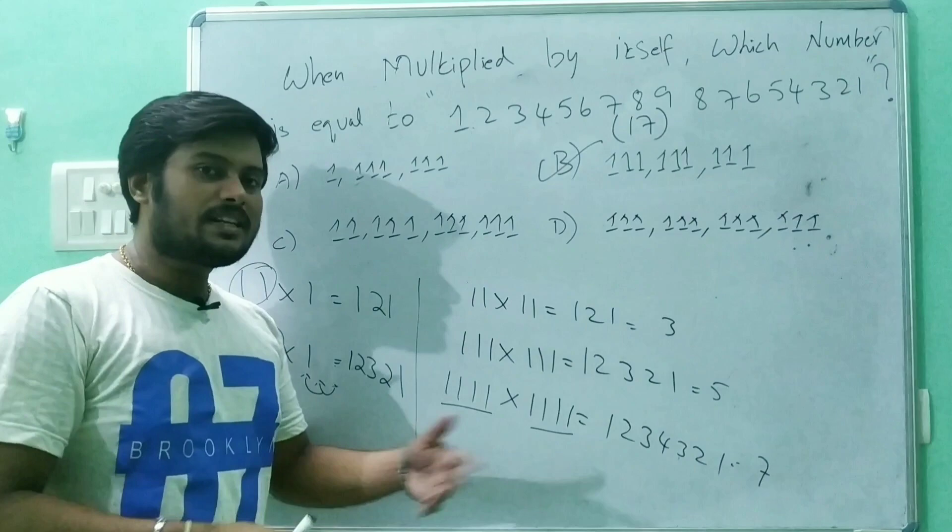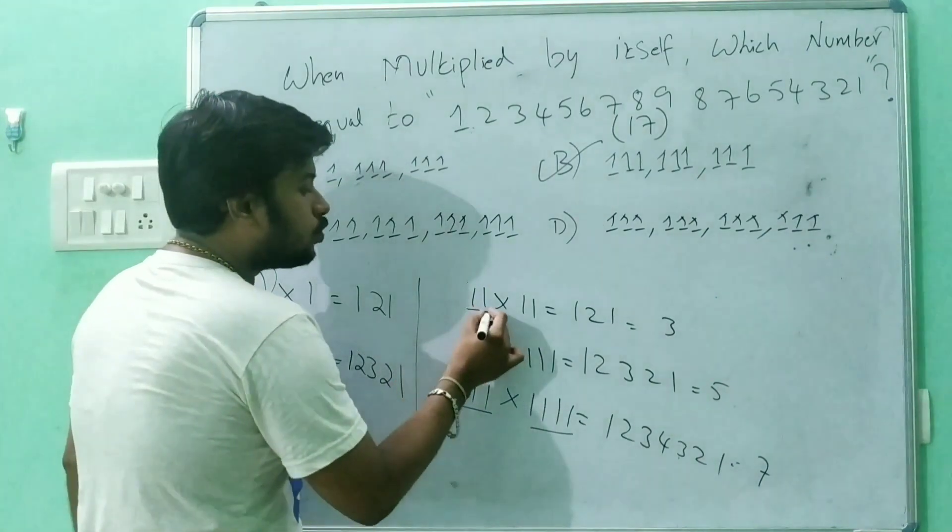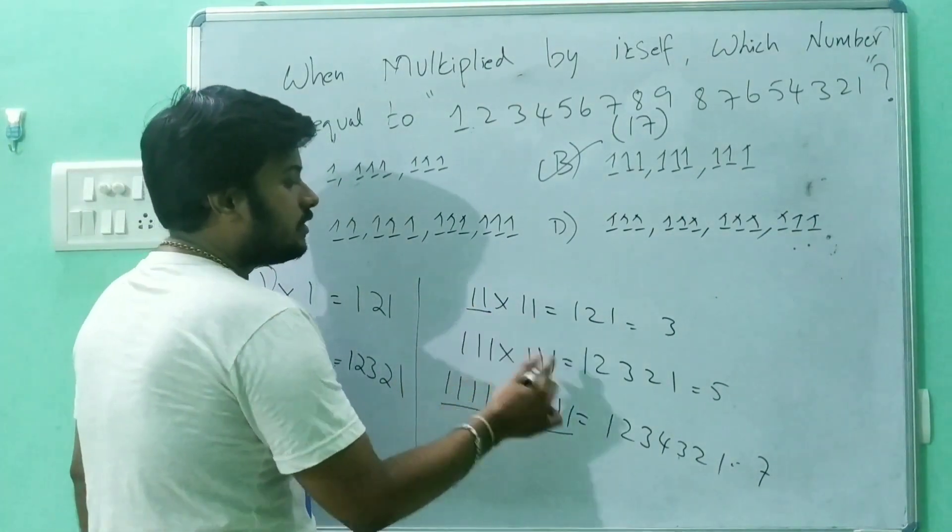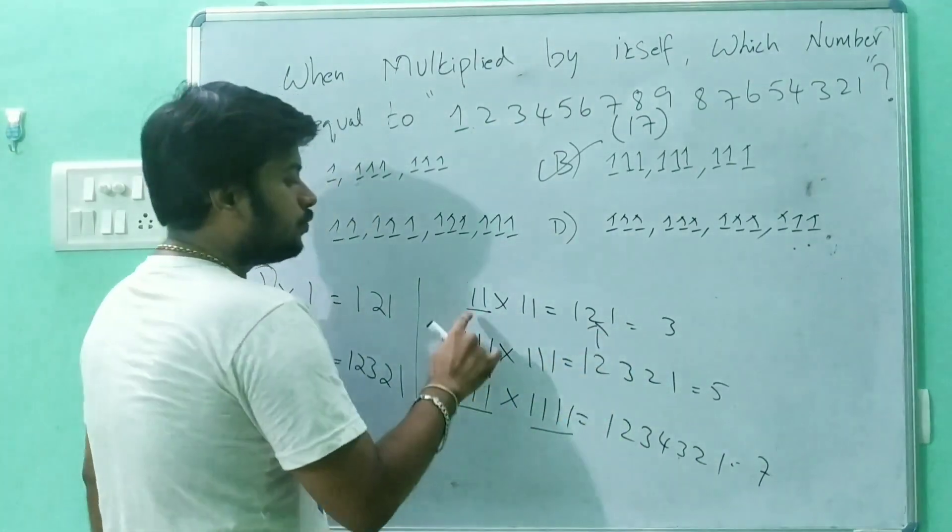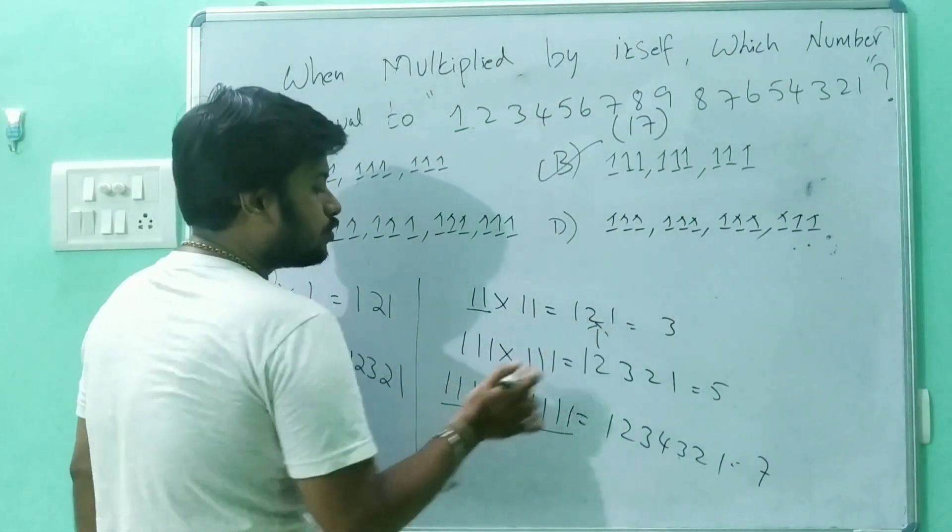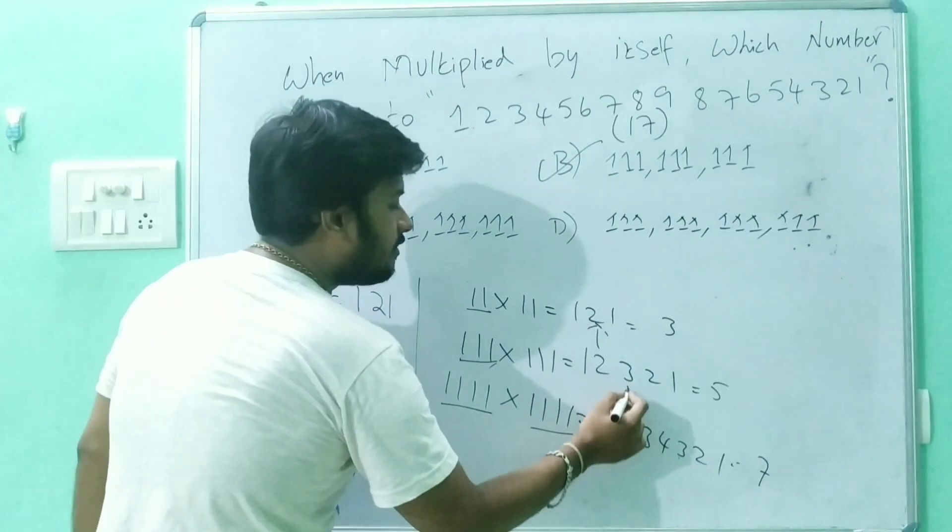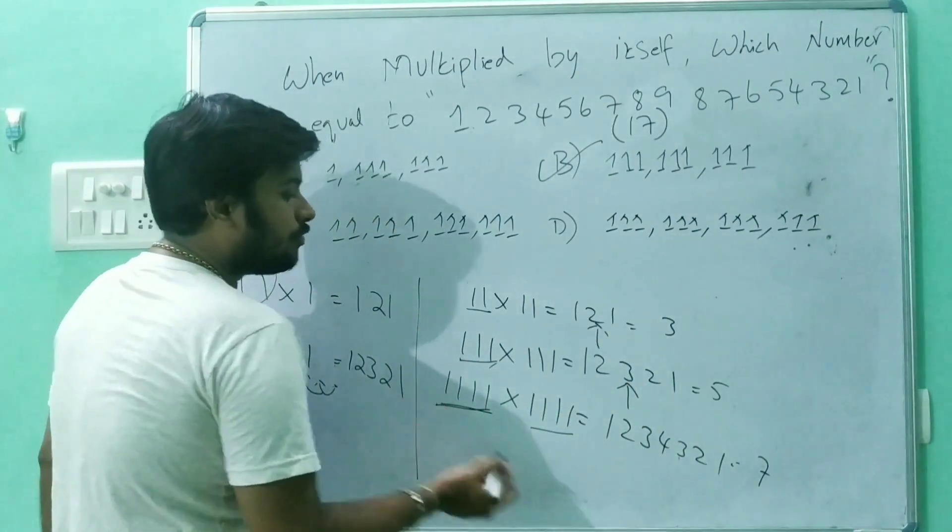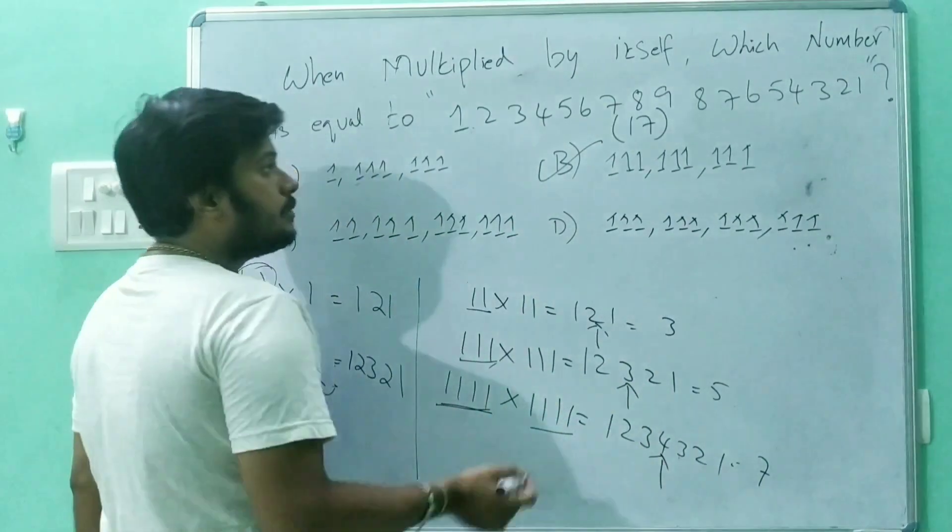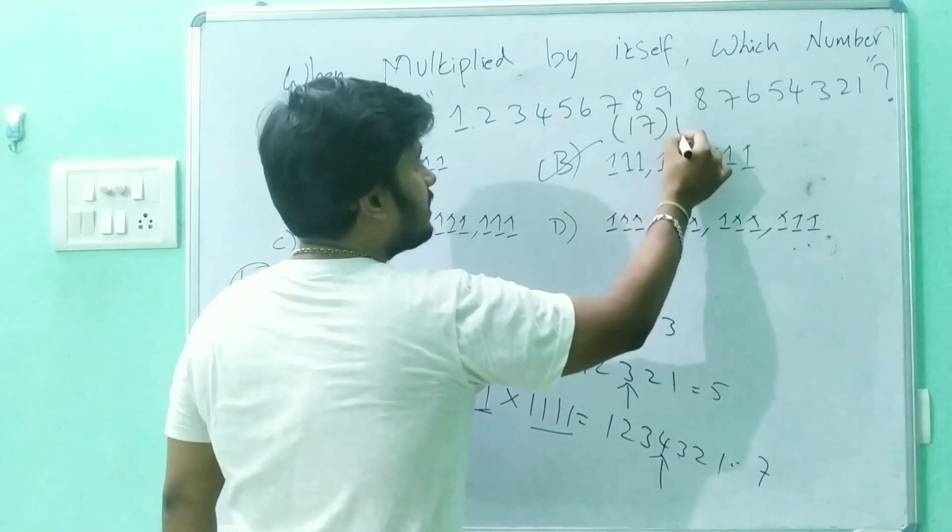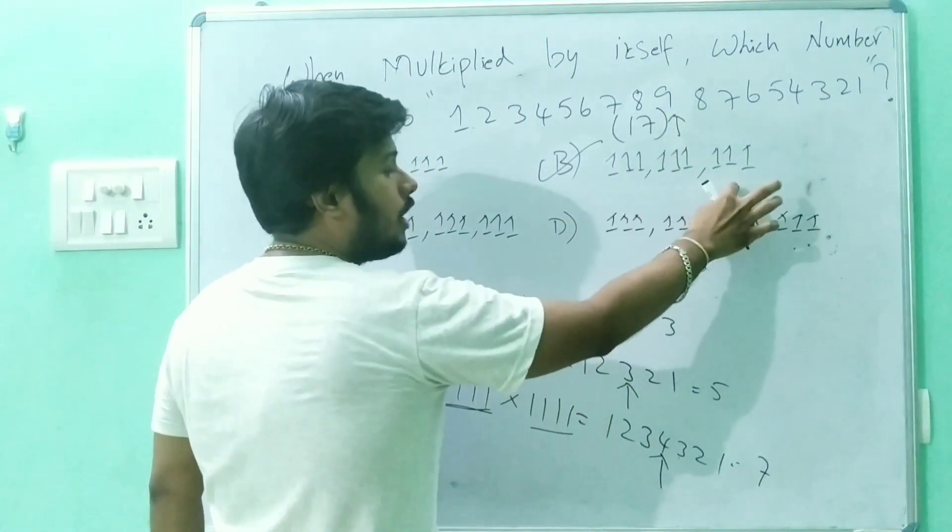There is one more simpler logic to solve this problem. Two ones: 11 into 11, the middle value is 2. Three ones, middle value is 3. Four ones, middle value is 4. Similarly, what is the middle digit of this number? It's 9. So the answer is nine digits.